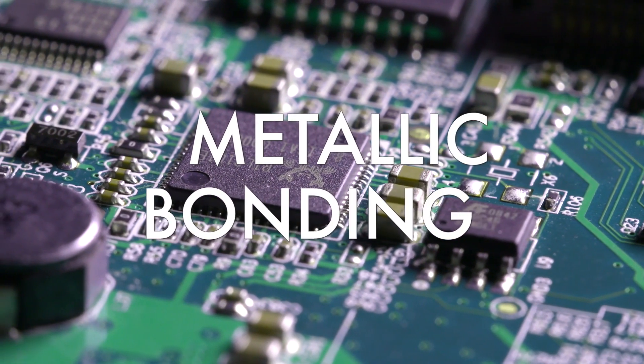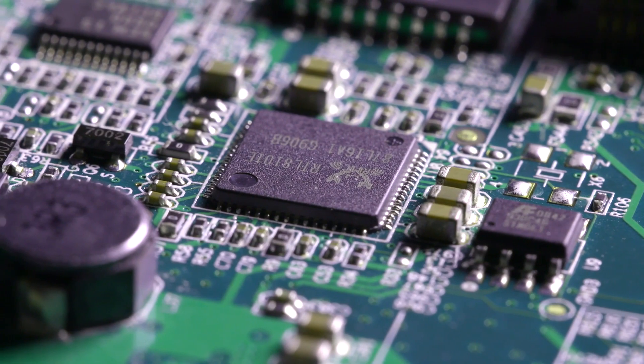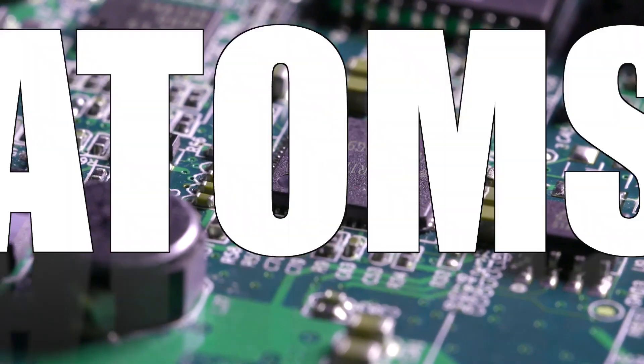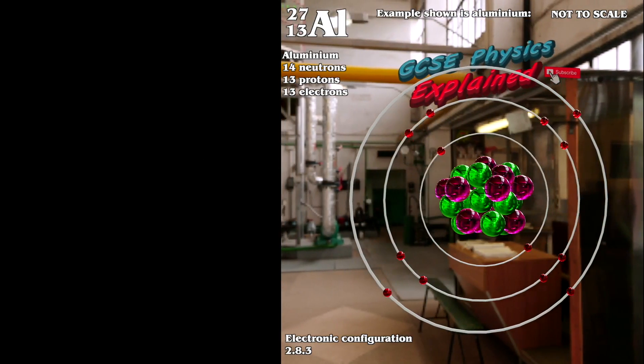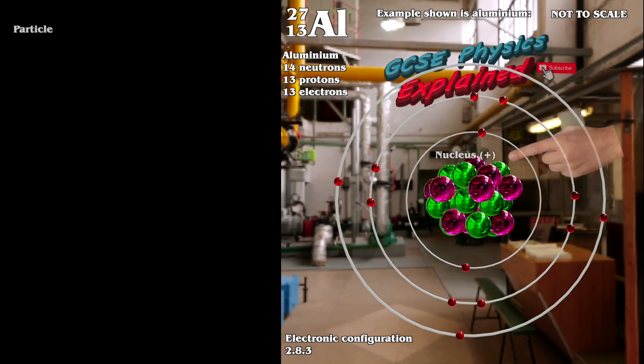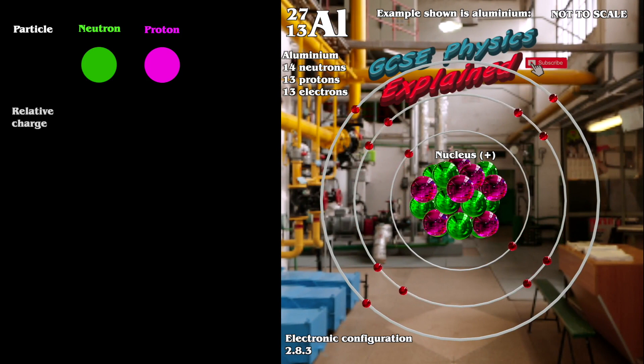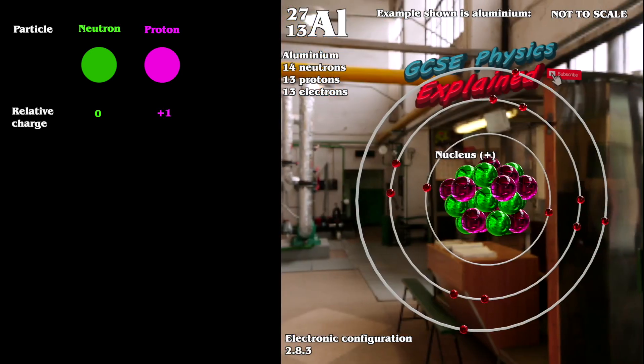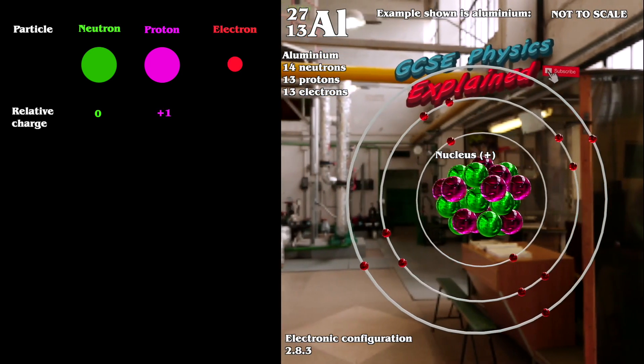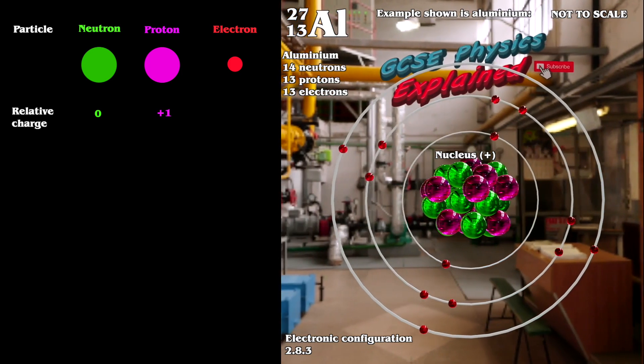To understand metallic bonding, we need to look at the structure of the atom. An atom contains a central nucleus where protons and neutrons are found. A neutron has no charge. A proton has a relative charge of plus 1. An electron has a relative charge of minus 1.